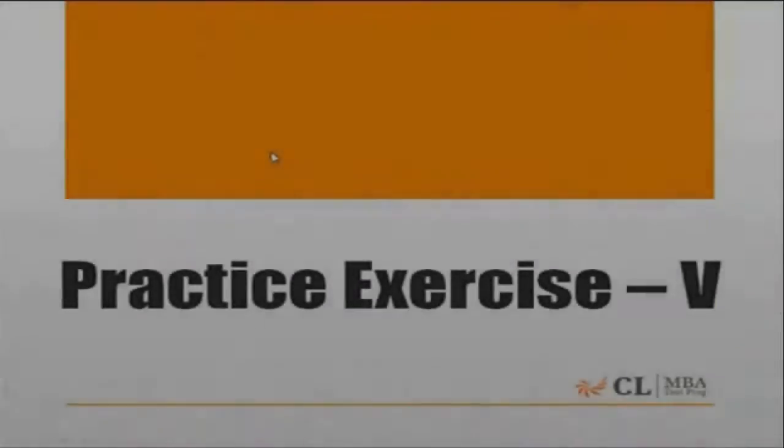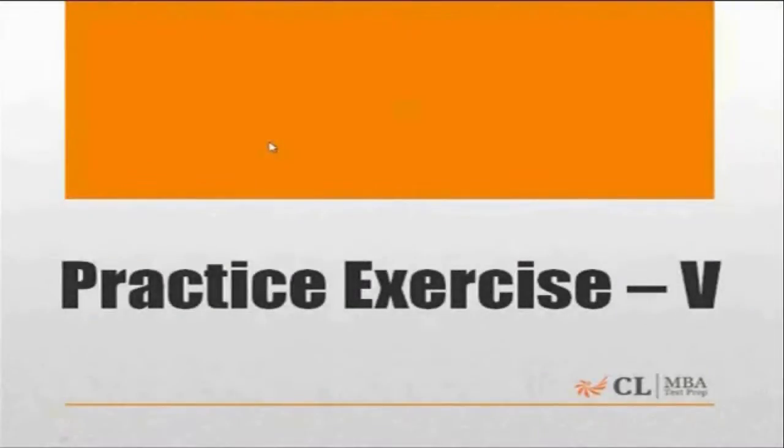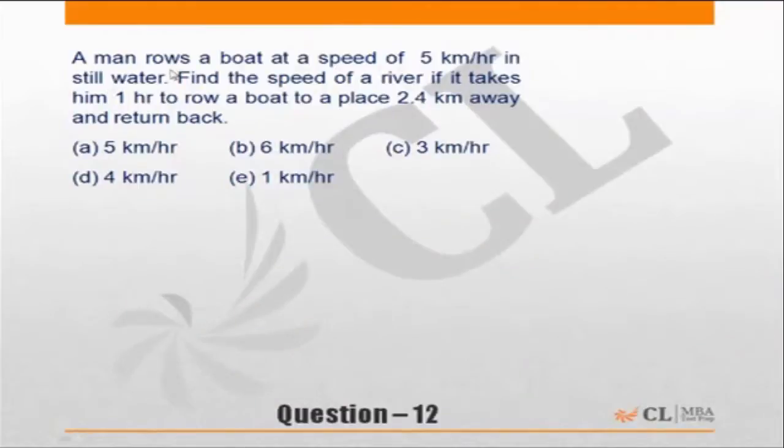That is Exercise 5: Time, Speed, Distance. Let's go through the questions of this exercise. A man rows a boat at the speed of 5 kilometers per hour in still water. Find the speed of river if it takes him 1 hour to row a boat to a place 2.4 kilometers away and return back.